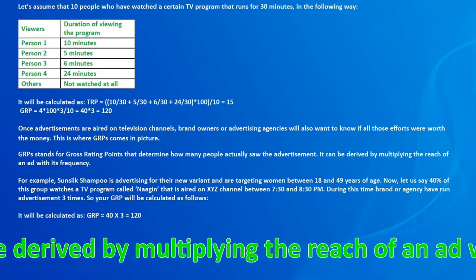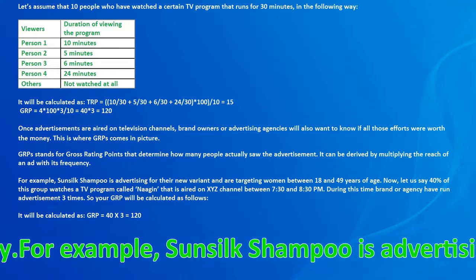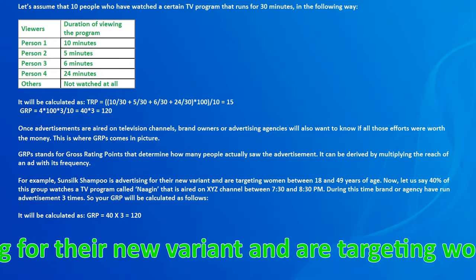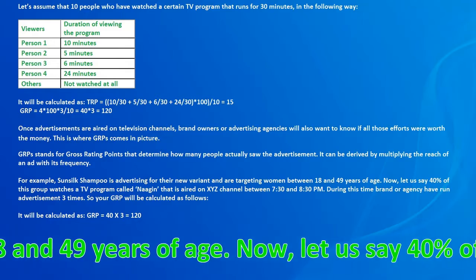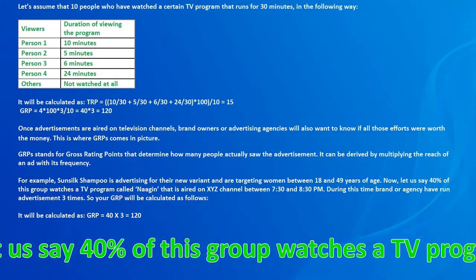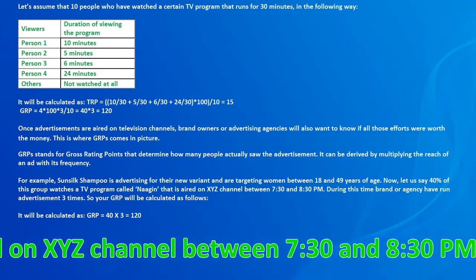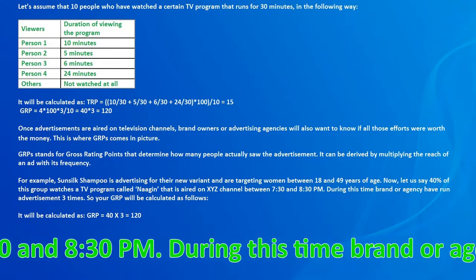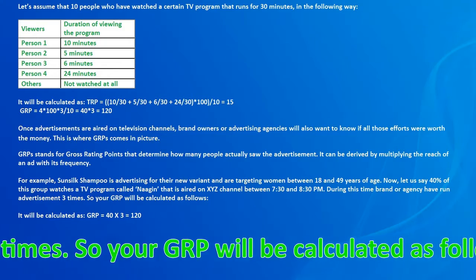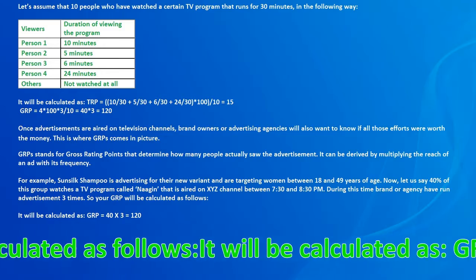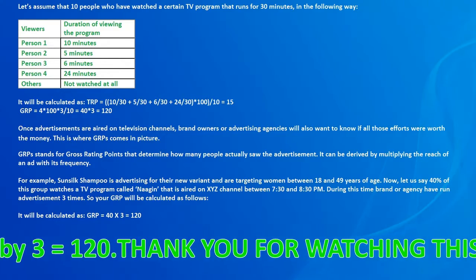GRP can be derived by multiplying the reach of an ad with its frequency. For example, Sun Silk Shampoo is advertising for their new variant and targeting women between 18 and 49 years of age. Let's say 40% of this group watches a TV program called Noggin, aired on XYZ channel between 7:30 and 8:30 PM. During this time the brand ran the advertisement three times. So GRP equals 40 multiplied by 3, which equals 120.